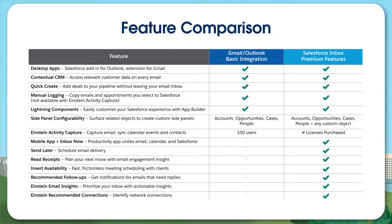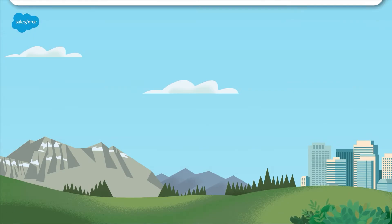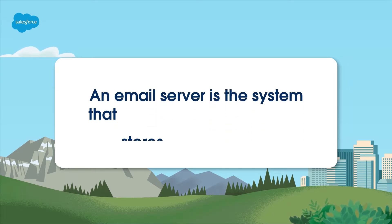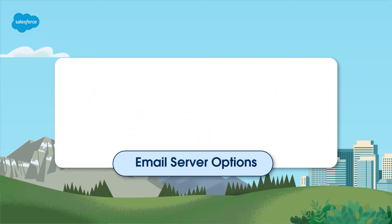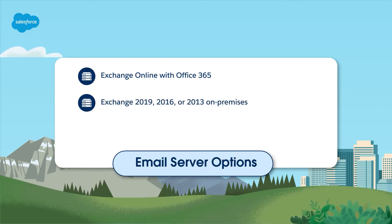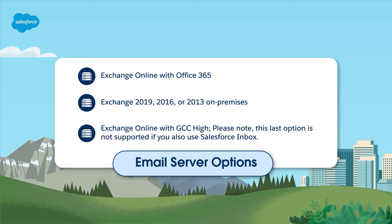There's no doubt that the Outlook integration or the Outlook integration with Inbox is a real-time saver, but before putting it into place, you need to make sure that your system meets some requirements. Which email server do you use? An email server is the system that stores and delivers email and calendar event data. Server options for the Outlook integration are Exchange Online with Office 365, Exchange 2019, 2016, or 2013 on-premises, and Exchange Online with GCC High. Please note, this last option is not supported if you also use Salesforce Inbox.